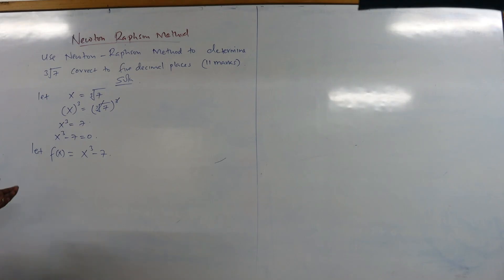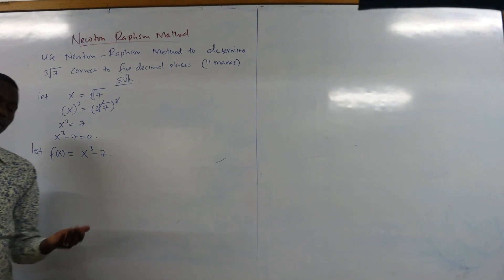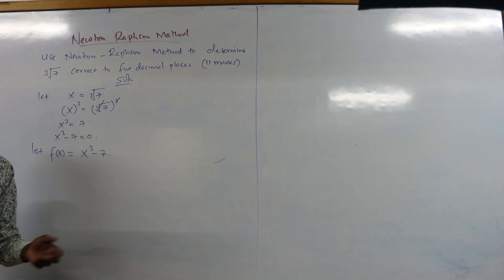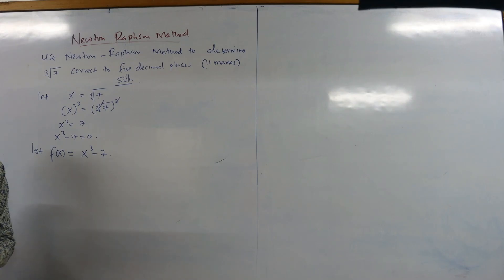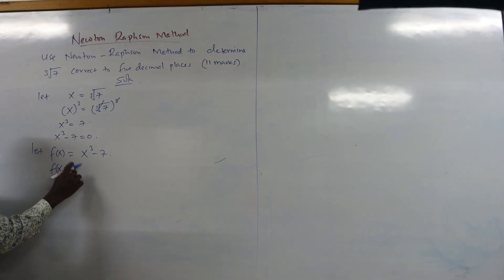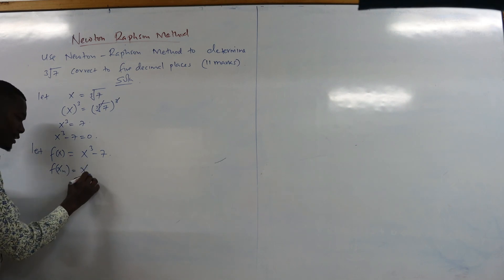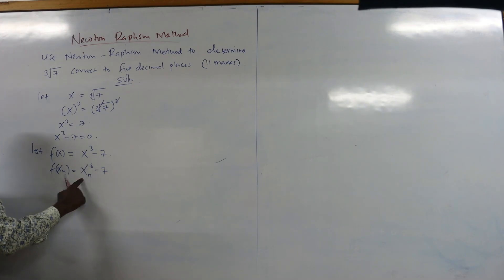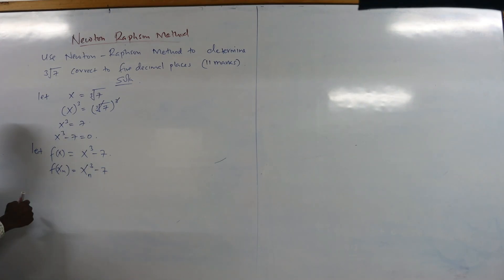From the Newton-Raphson method, the better approximation x_(n+1) is given by: x_(n+1) = x_n − f(x_n) / f'(x_n). We write the function in terms of x_n, so f(x_n) = x_n³ − 7. There is no constant x; we only substitute the subscript x_n where x appears.